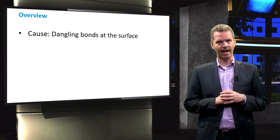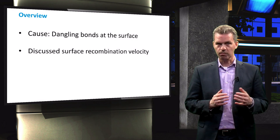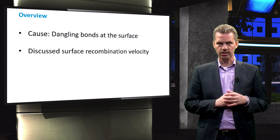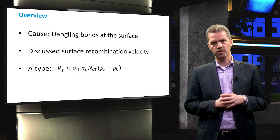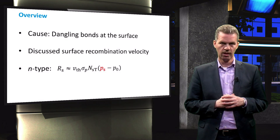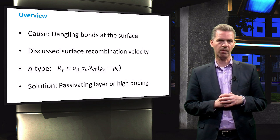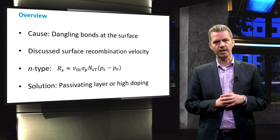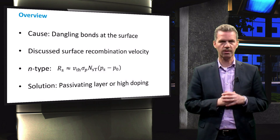Summarizing: we have seen that the dangling bonds at the surface facilitate recombination. We have explained this process by the surface recombination velocity and discussed an example. The recombination rate shows a linear dependence on the surface trap density and the minority carrier concentration at the surface. This led to two solutions: first, to reduce the trap density by depositing a passivating layer on the surface; and secondly, reducing the minority carrier concentration at the surface by applying a highly doped region just underneath the surface.